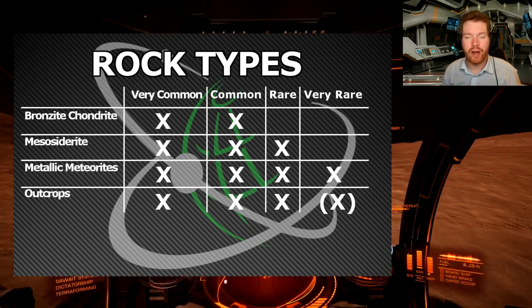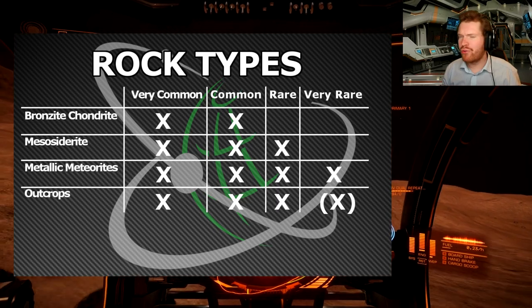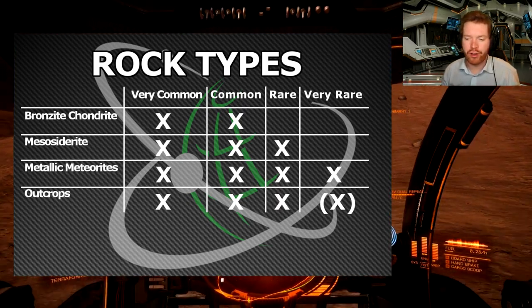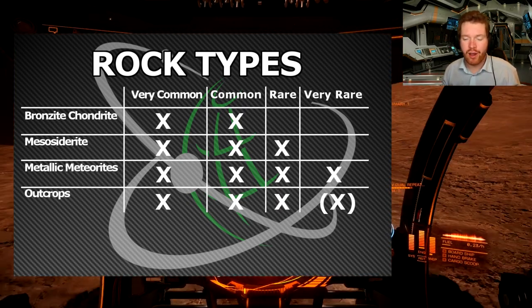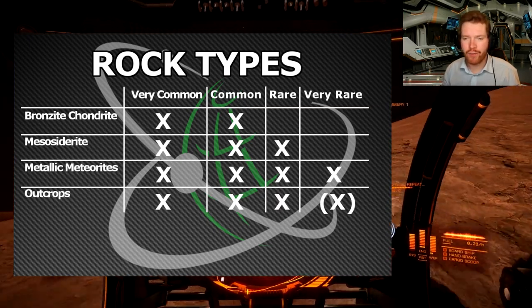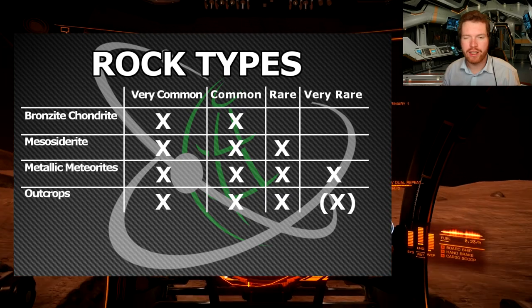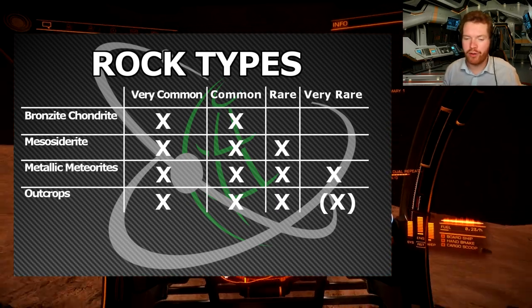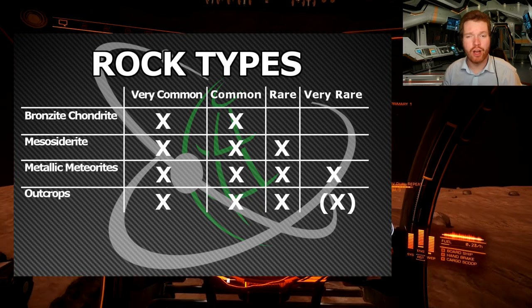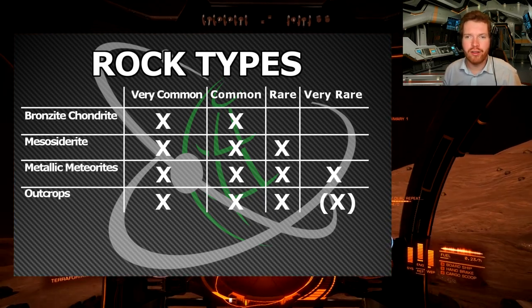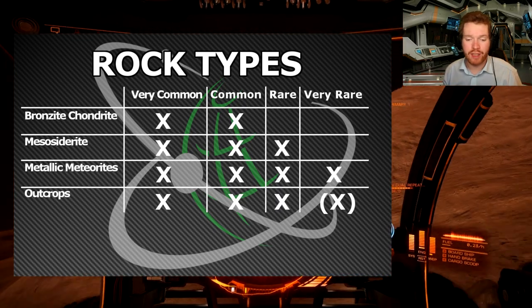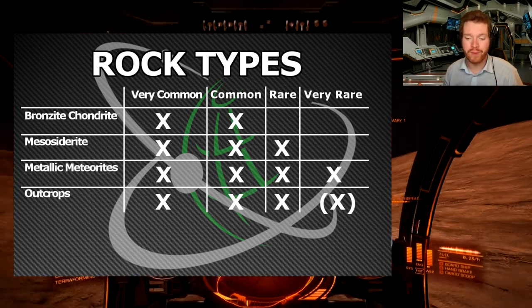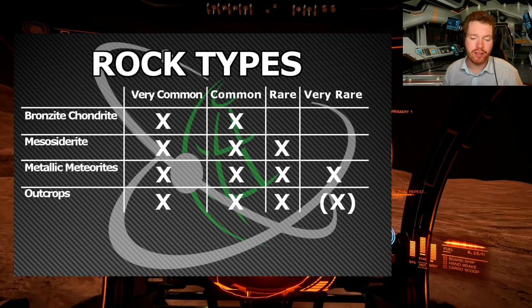Moving on, we begin to get rarer and rarer materials as we move down. The outcrop is a little special because most of the time it will just give you very common, common and maybe a few rares, yet other times it will give you a lot of very rare materials. So outcrops are kind of the joker — sometimes giving you very good materials, sometimes very common materials. It depends on the rarity of the materials you're looking for as to what type of rock you want. Ideally if you're looking for the more rare materials, you'll probably want to find metallic meteorites and outcrops.